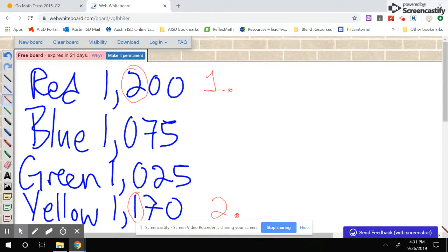For the zeros, they're the same, so we have to go to the tens place to understand which one is greater. We have a 7 in the blue and a 2 in the green. 7 is greater than 2, so we know that this one will be number 3, and finally this will be number 4.